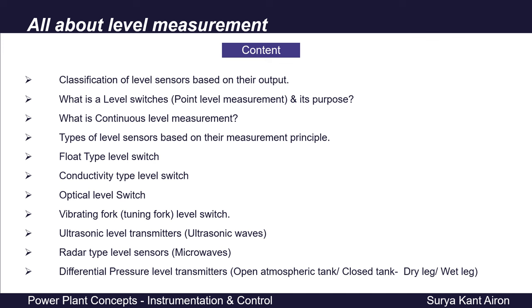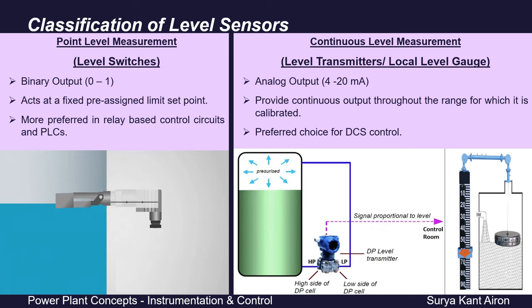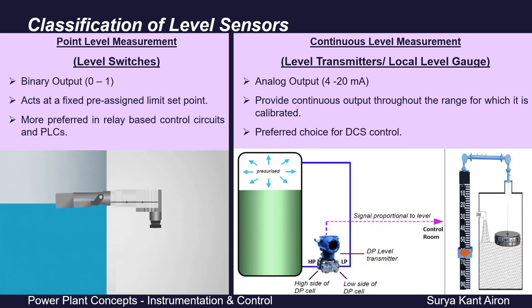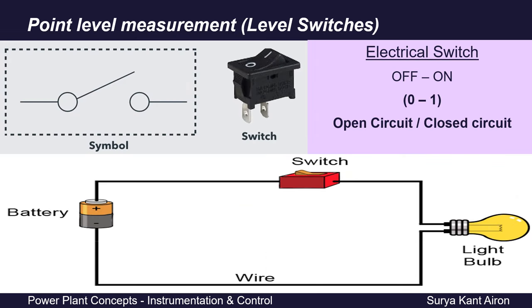In some applications, how much liquid is filled in a tank or vessel is important to us, whereas in some cases we do not need the complete range — only a particular level limit is important, to switch on or off a pump or to open or close a valve. So depending upon the application, we can classify level measurement into two types: first is point level measurement, and second is continuous level measurement.